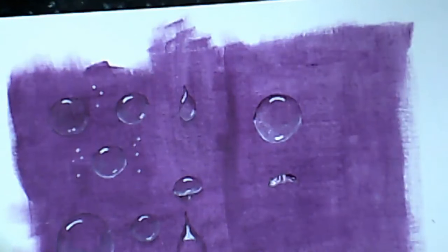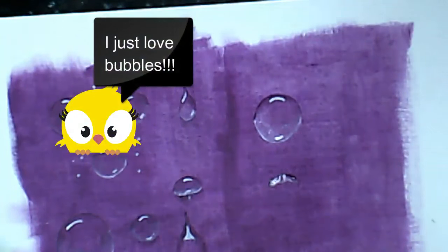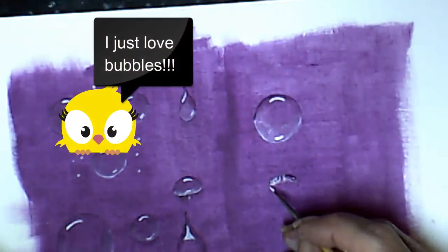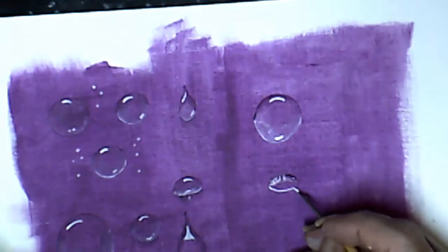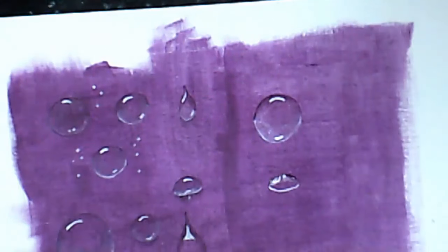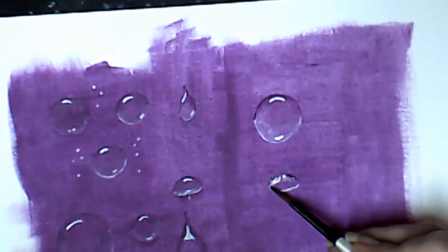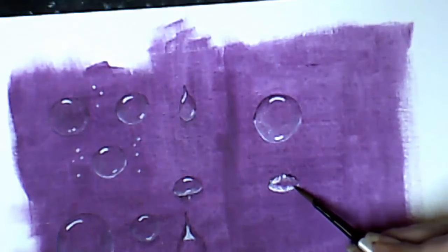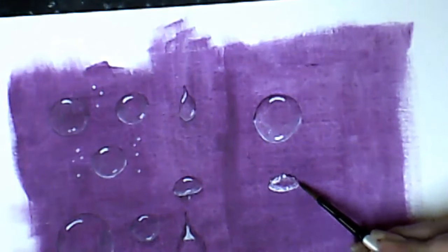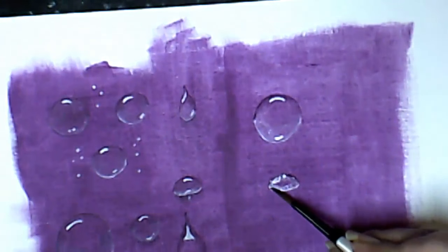Now, because it's sitting on something, the bottom is not perfectly round. It's round, but it's kind of a flat round. Same thing, blend it through the center, trying not to leave harsh lines.